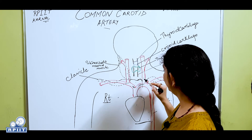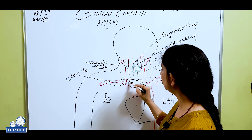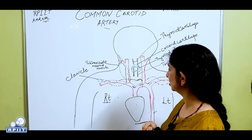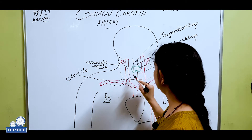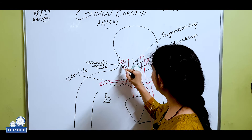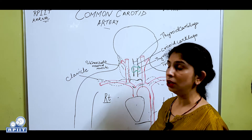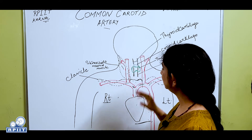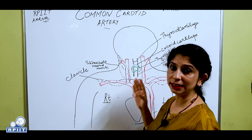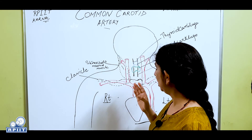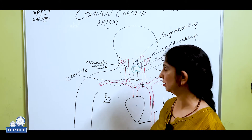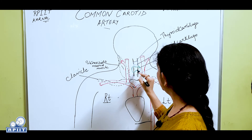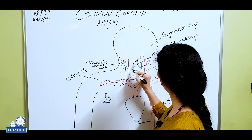After their origin, when they ascend into the neck behind the sternoclavicular joint, they have the same course. In the neck they ascend upward, passing deep to the anterior border of the sternocleidomastoid muscle on either side, and are enclosed in the carotid sheath. In the center we have the trachea, and in front of the trachea we have the butterfly-shaped thyroid gland.